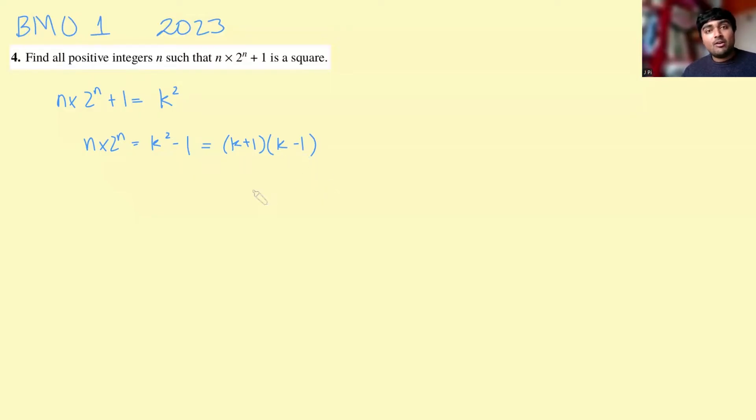Now, this means that k must be odd. Why does it mean k is odd? Because if k was even, then an even number plus 1 is odd, even number minus 1 is odd, odd times odd is odd, and then it wouldn't be able to equal this even number on the left. So we get therefore k is odd,